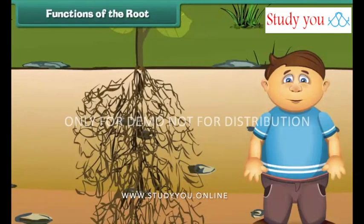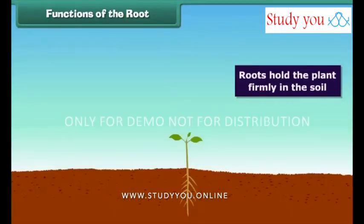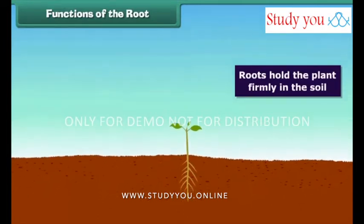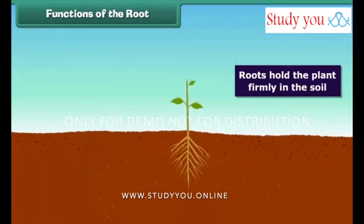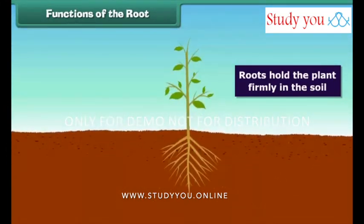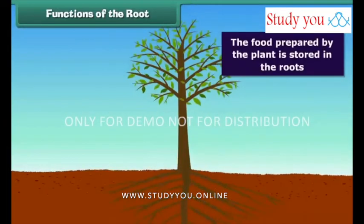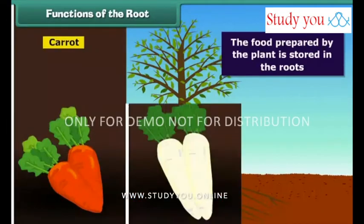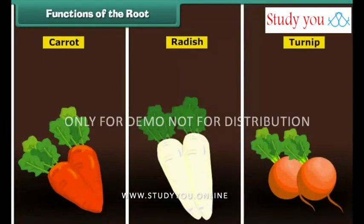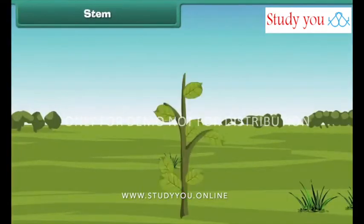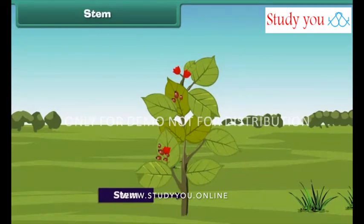Now, what are the functions of roots? Roots hold the plant firmly in the soil. They also absorb water and nutrients from the soil and send them to the other parts of the plant. Roots also perform the function of food storage. In some plants such as carrot, radish, and turnip, the food prepared by the plant is stored in the roots — we eat these roots and get nutrition.